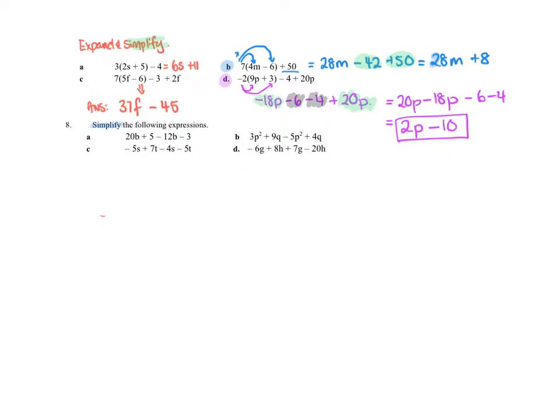Next one, we've got simplifying the expressions. They're expressions because they don't have an equal sign. So now, simplifying, I can only group like terms. So I'm going to do question B here. Now, I'm going to find the like terms. So the p squared terms are like terms, and the q terms are like terms. So I will simplify them. You can rewrite it again with them next to each other if that helps. So I'll do that. So keep the sign that's in front of it with it. So I've got 3p squared minus 5p squared. That means I'd have negative 2p squared. And 9q plus 4q is 13q. And there's my answer.